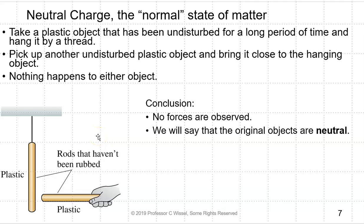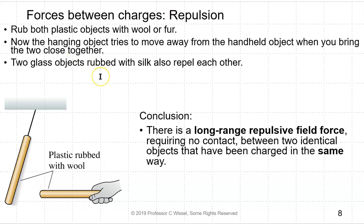Neutral charge is the normal state of matter. If you take undisturbed plastic objects and bring them close together, nothing happens to either object. No forces are observed and we say the original objects are neutral. If you rub both plastic objects with wool or fur, the hanging object tries to move away from the handheld object. Two glass objects rubbed with silk will also repel each other. The conclusion: there is a long-range repulsive field force requiring no contact between two identical objects that have been charged in the same way.